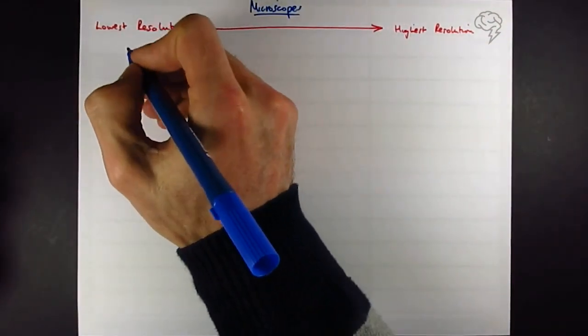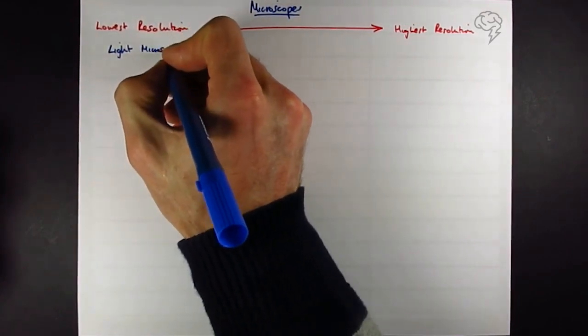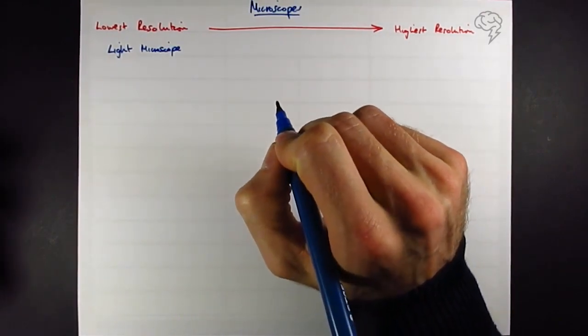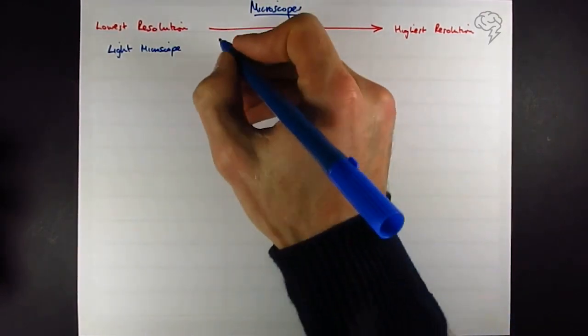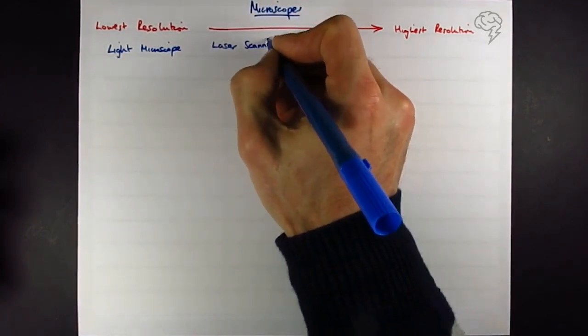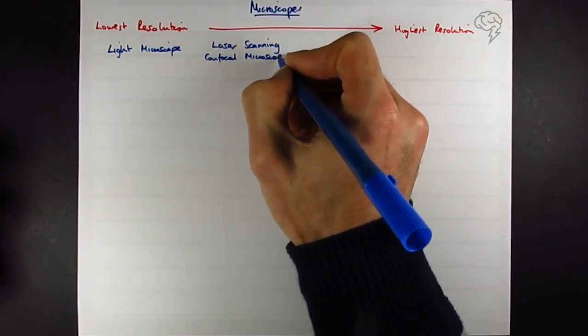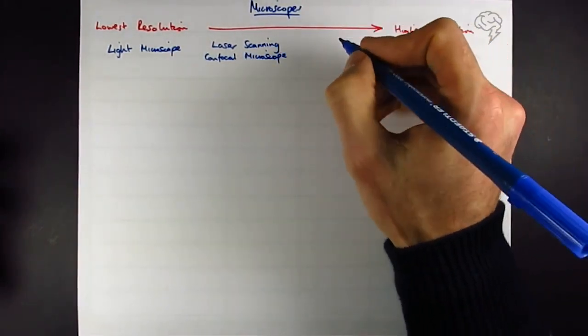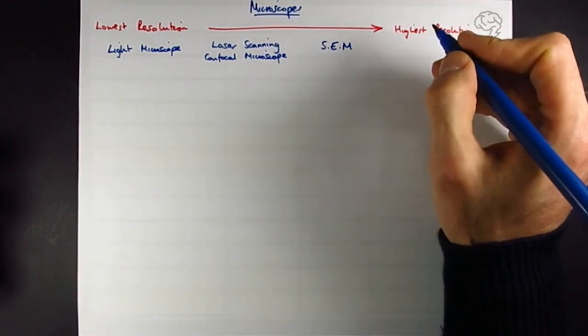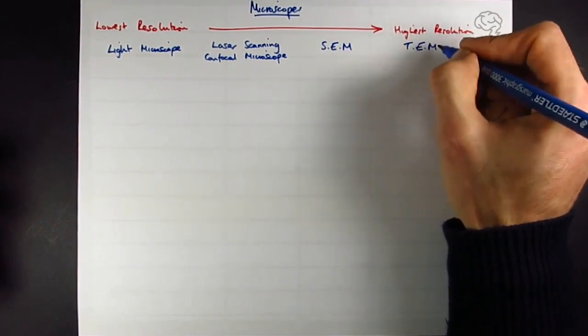So lowest resolution, easiest to use is a light microscope. Next up is the one we're going to focus on in this tutorial mostly, is the laser scanning confocal microscope. Then we have a scanning electron microscope. I'm actually just going to be lazy and write SEM, and then highest resolution we've got transmission or TEM.